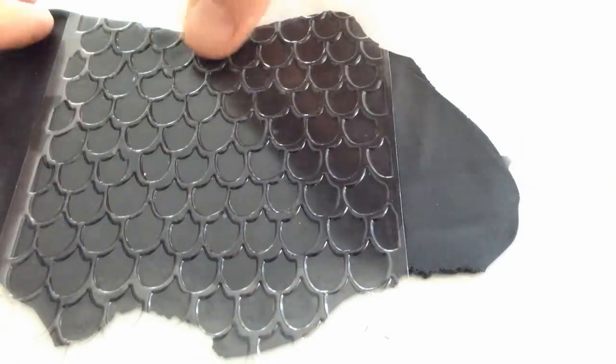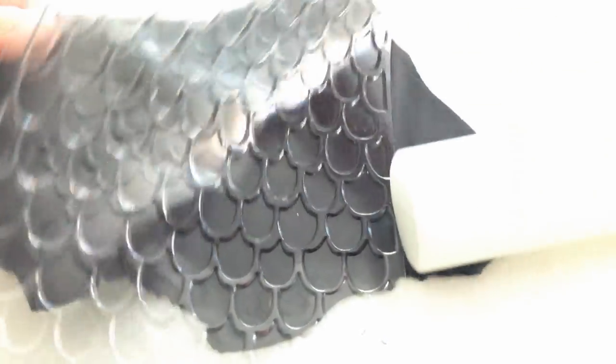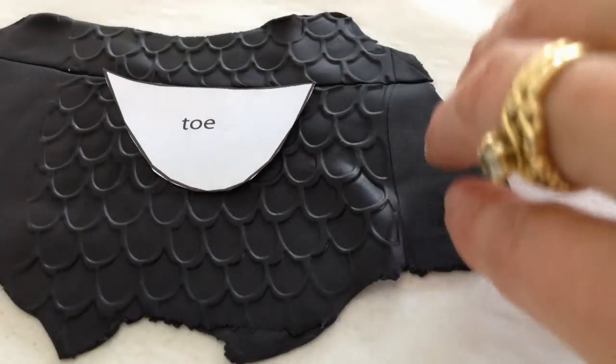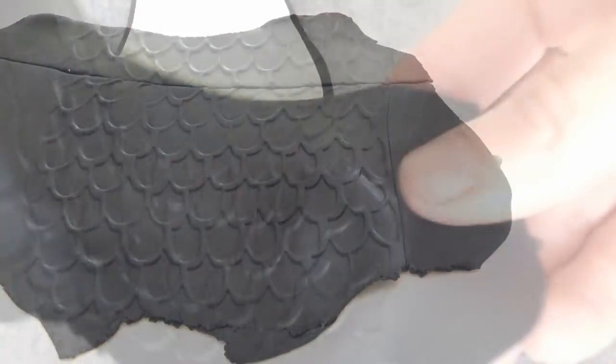Roll out your black fondant and then place a texture mat over the top and roll over it to make the imprint on the fondant. Then remove the template and using the toe template, cut along the top of the toe shape but leave the rest of it.